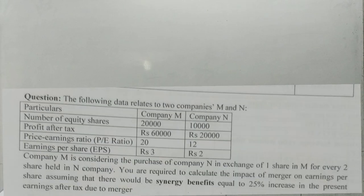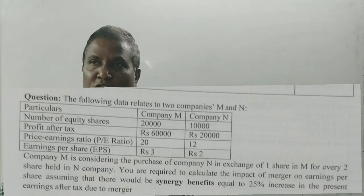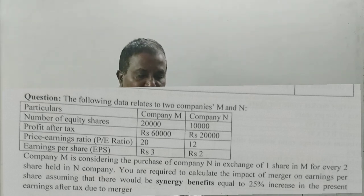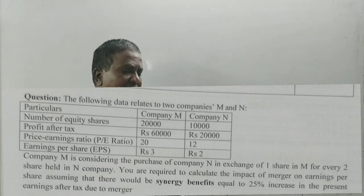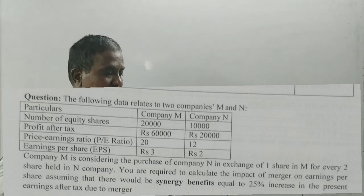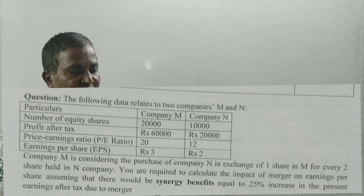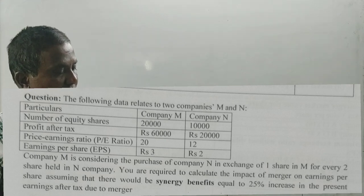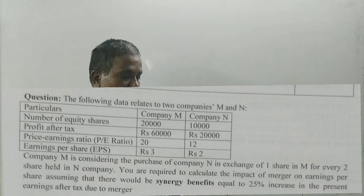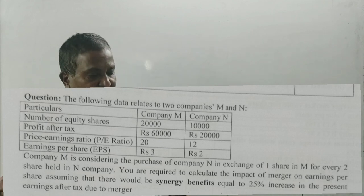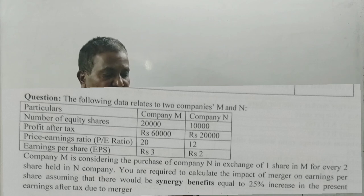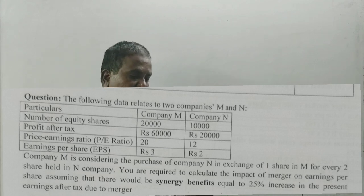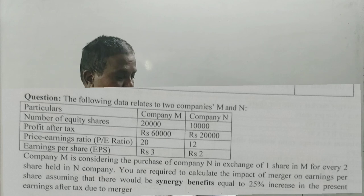Students, the following data relates to two companies M and N Limited. Number of equity shares of M company and N company: 20,000 and 10,000. Profit after tax: 60,000 and 20,000. Price earning ratio (PE ratio) is 20 and 12. Earning per share is 3 rupees and 2 rupees.